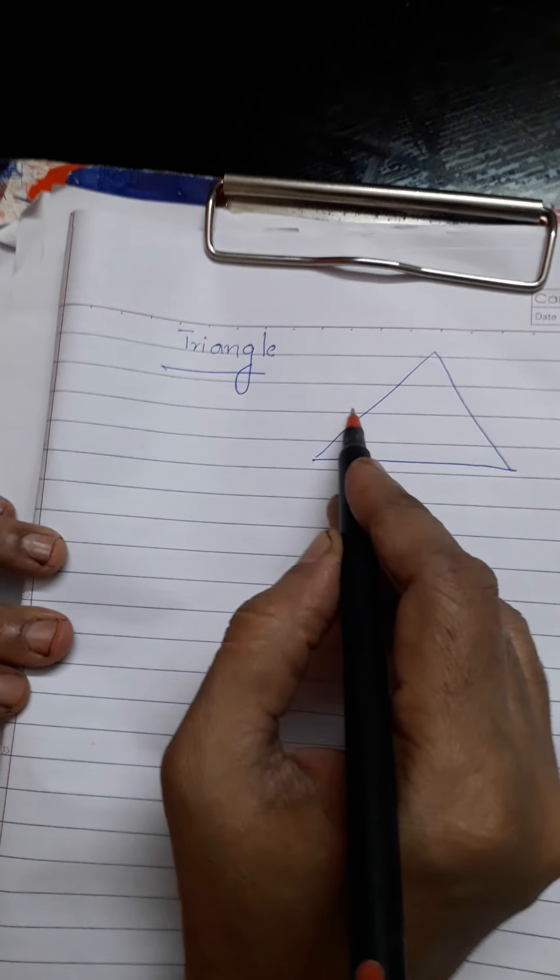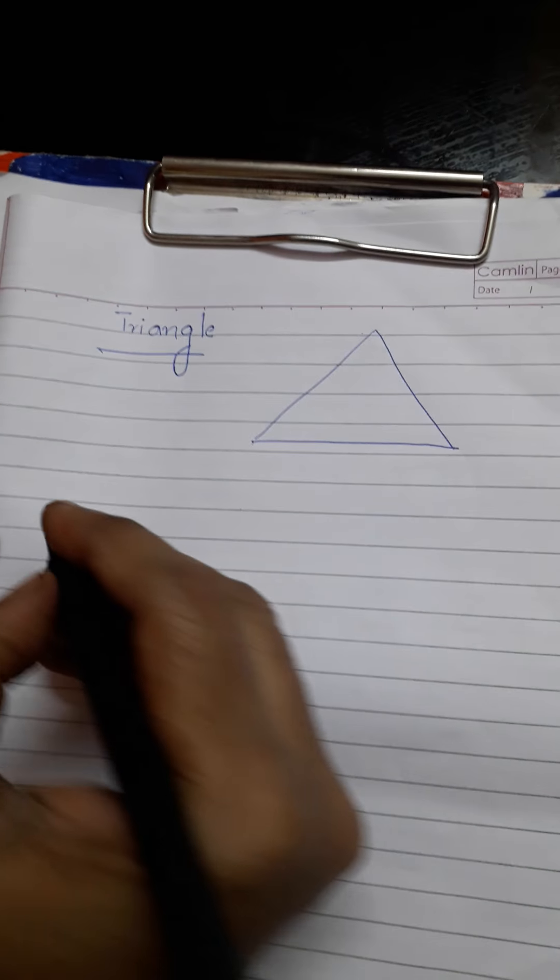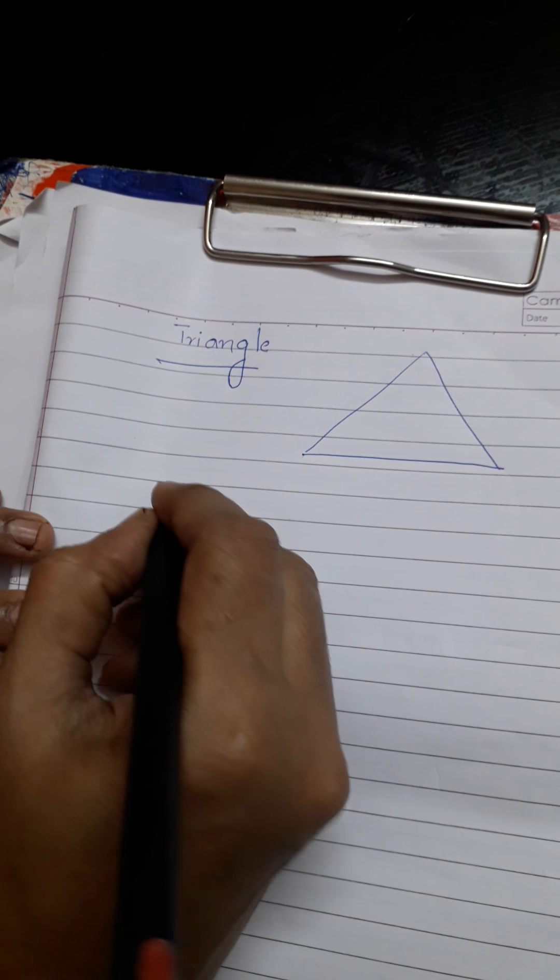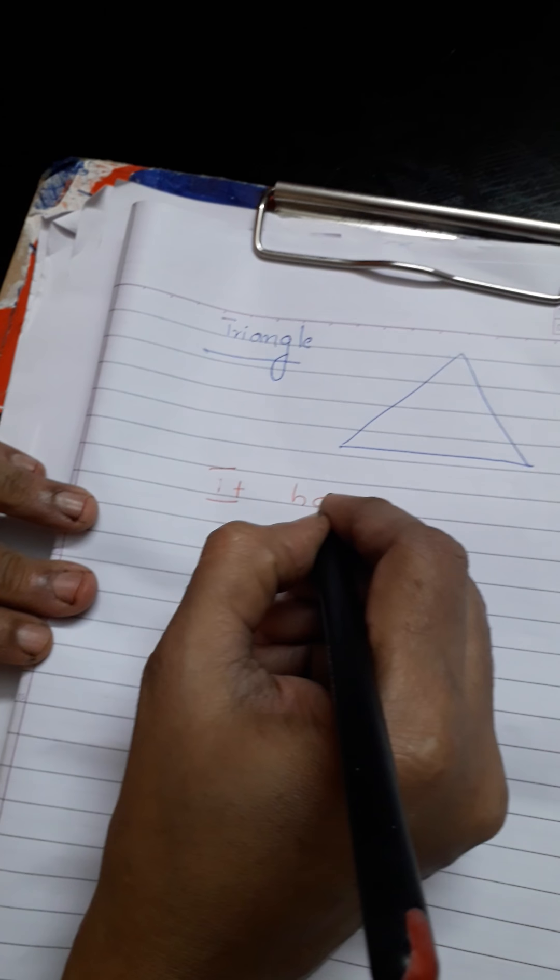Triangle is a three-sided polygon. That is, it has three sides.